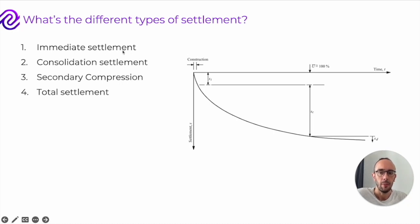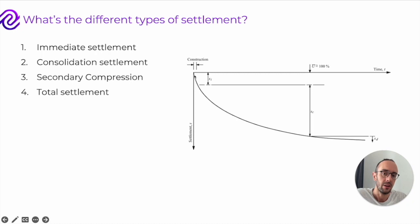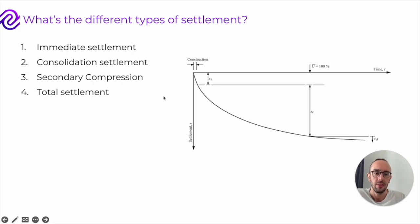The first is immediate settlement — the SI phase on the chart on the right — which normally happens during construction. This is when you first apply loading onto the foundation, or even the self-weight of the foundation itself causes it. At this stage, no water is being released from the pores of the ground yet — for something like clay, it's all still locked inside — so it's just the initial compression of the ground, happening over a very short space of time.